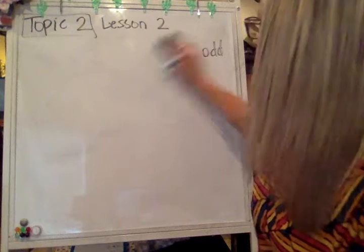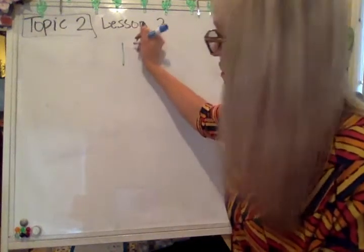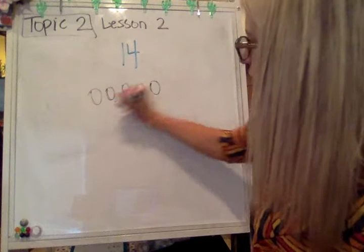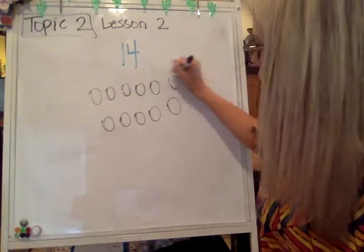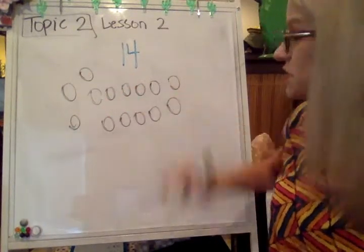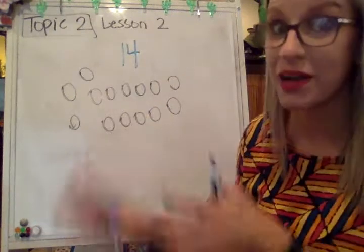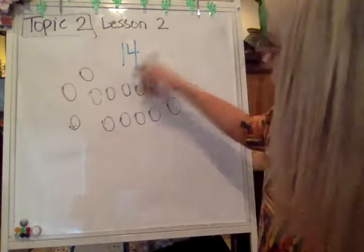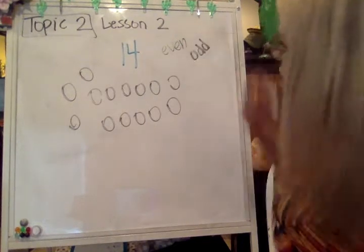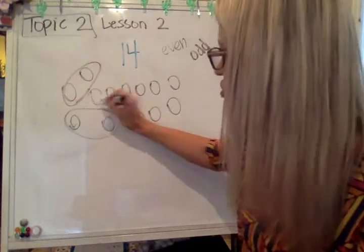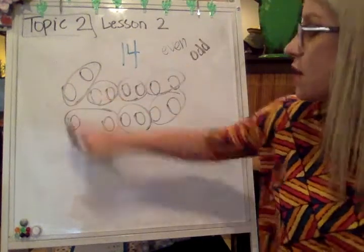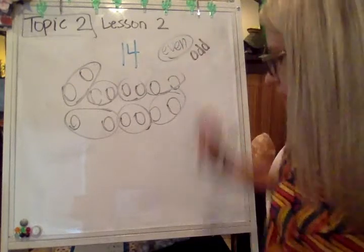Let's do another number. If the number was — let's try the number 14. So I'll draw 14 circles: one through fourteen. If I can pair them up and not have any leftovers, that means that number 14 is even. If I have a leftover, that means that number 14 is odd. So we're pairing them up into groups of two. Two in each of my little circle bubbles would mean that it is even. Because I don't have any leftovers, the number 14 is even.